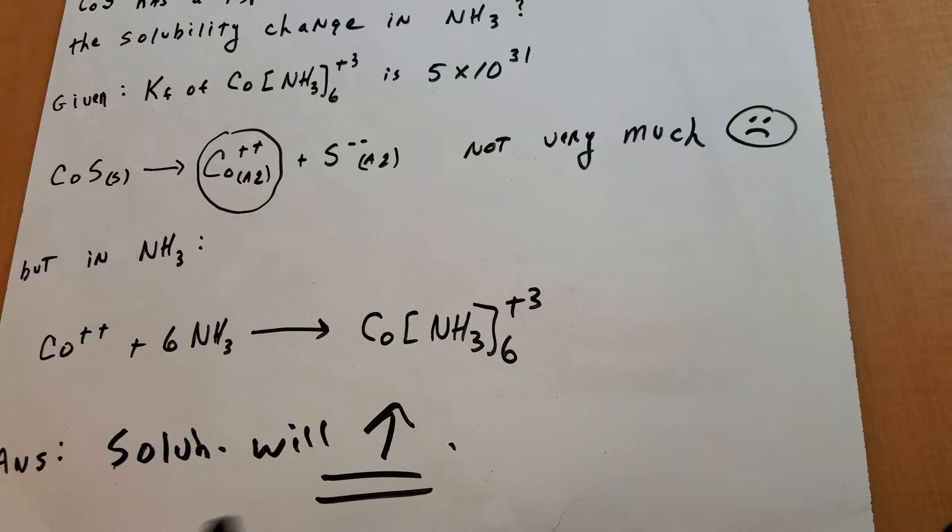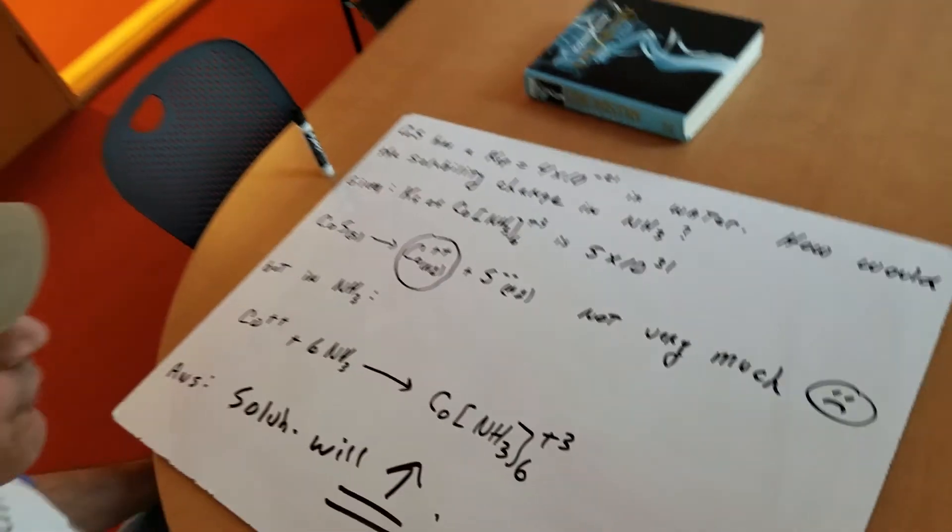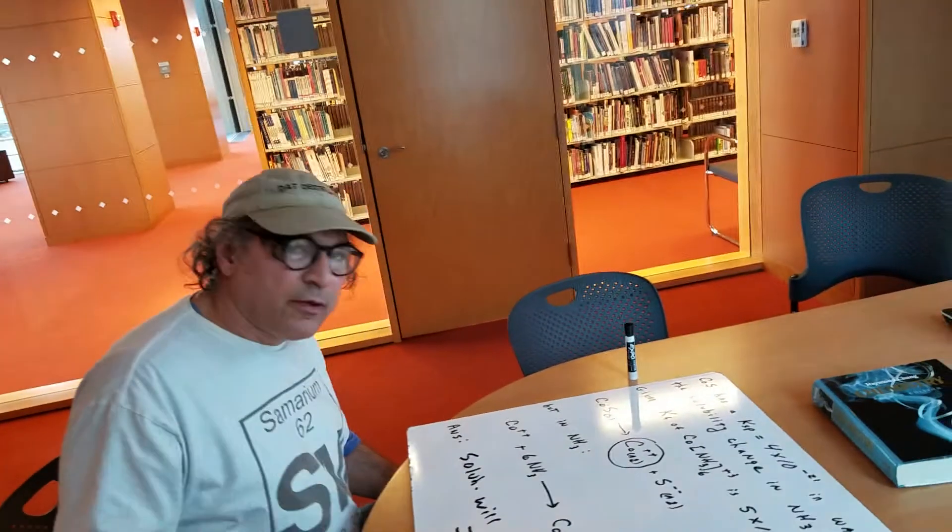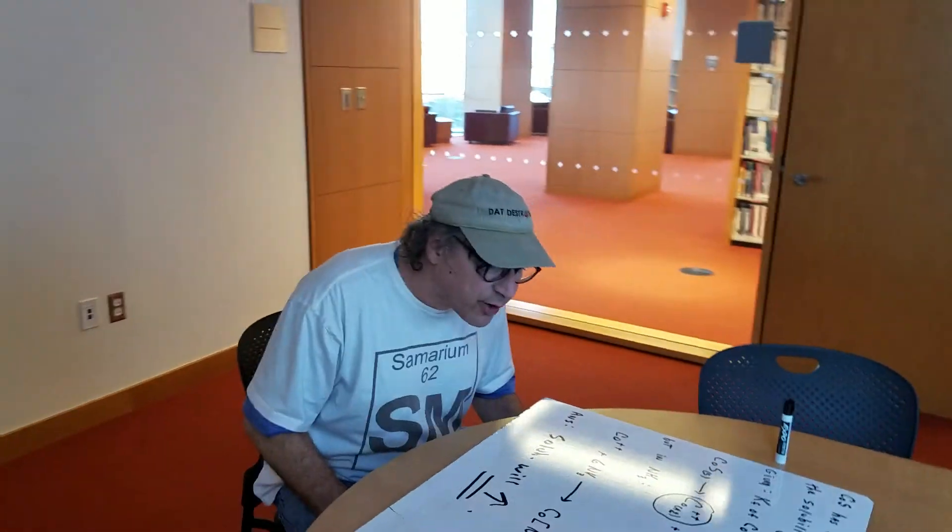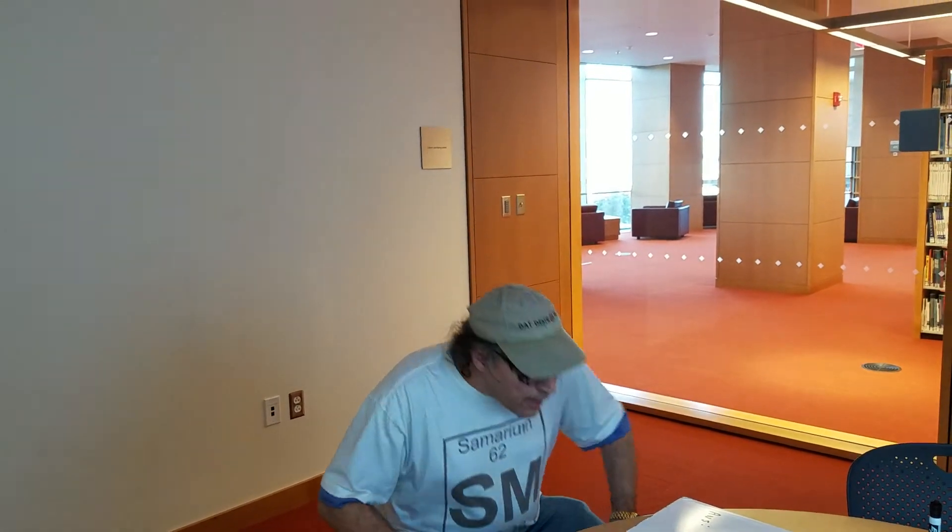There's another question for you to practice in the destroyer that I have on this. But, never forget, complex ion formation, especially with the transition elements. Sometimes these numbers are absolutely enormous. I hope that gives you a good idea on how to do a good theory question involving Ksp and solubility of complex ions.